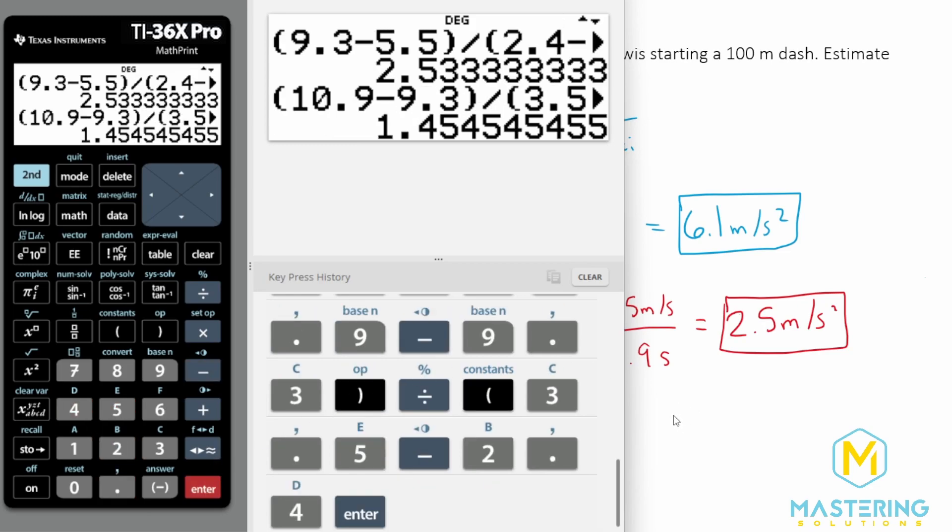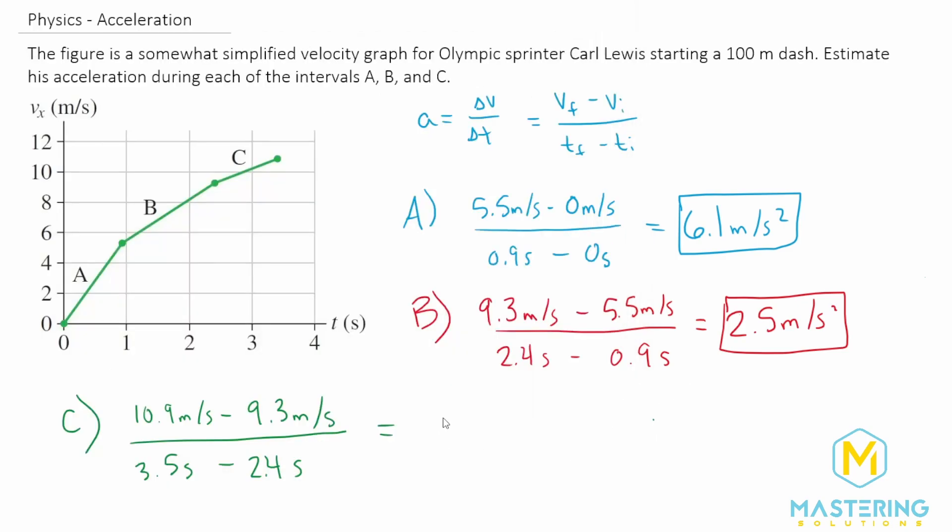Okay, so we have 1.4545. So let's just round that to 1.5. So 1.5 meters per second squared for the acceleration for the last one.